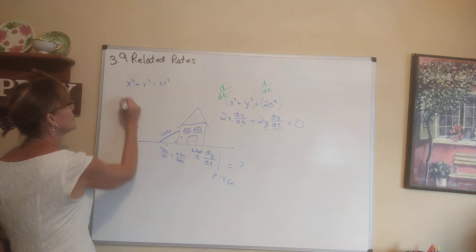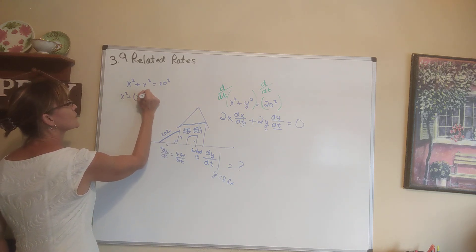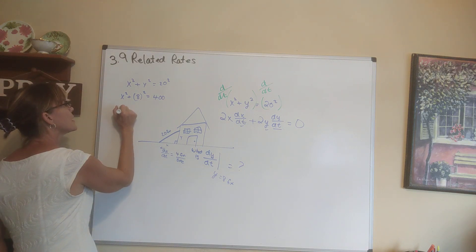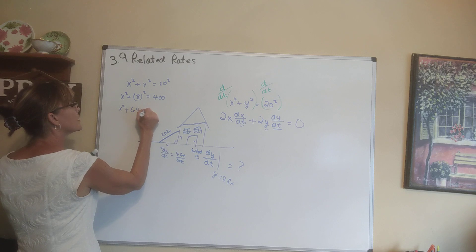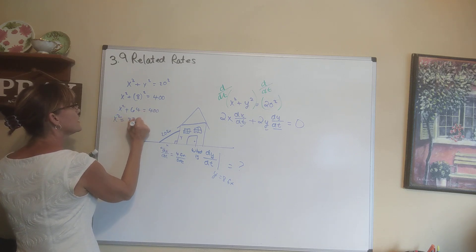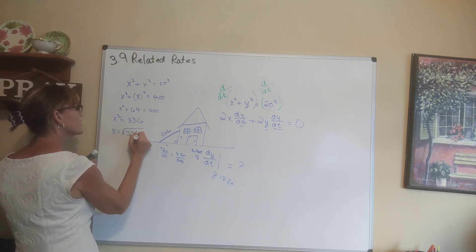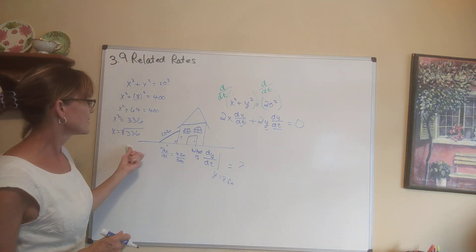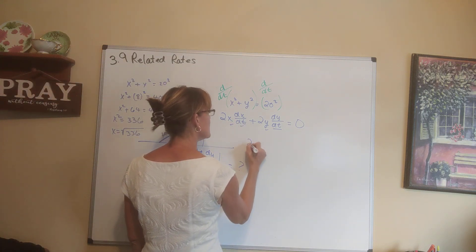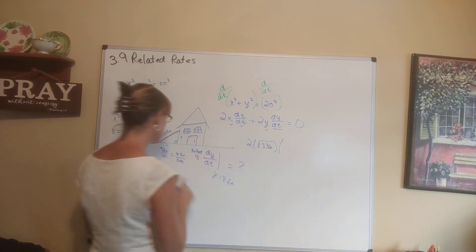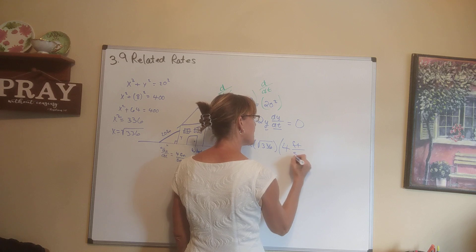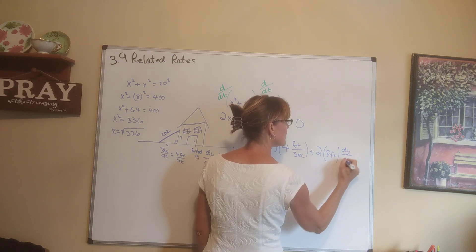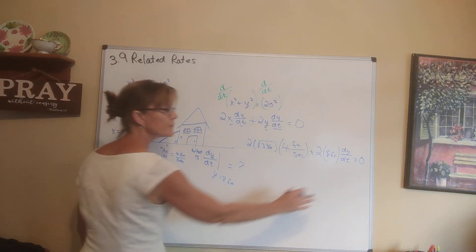x squared plus 8 squared equals 400. x squared plus 64 equals 400, so x squared equals 336, and x equals the square root of 336 — we take the positive root since it's a length. Now plugging in: 2 times the square root of 336 times dx/dt which is 4 feet per second, plus 2 times y which is 8 feet times dy/dt, equals 0.